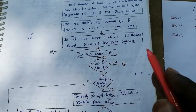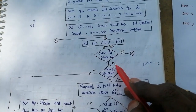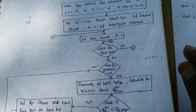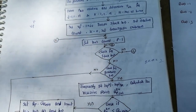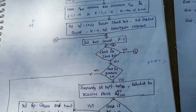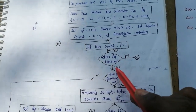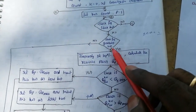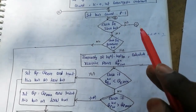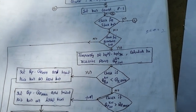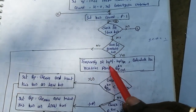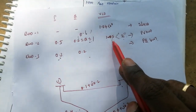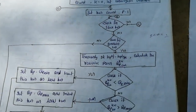If bus 1 is not a slack bus, it may be a generator bus or load bus. There is no need to calculate voltage for the slack bus since it is constant for every iteration. If bus 1 is not a slack bus, check whether it is a generator bus. If yes, temporarily assume the voltage value as specified in the data, then calculate the reactive power Q.